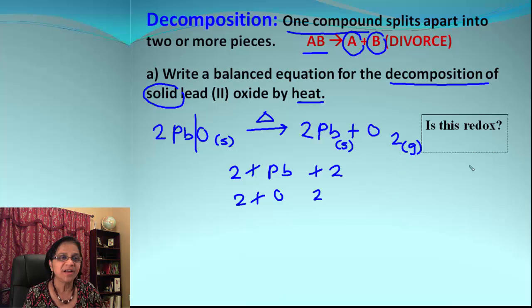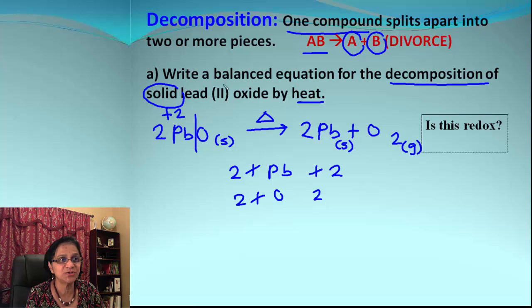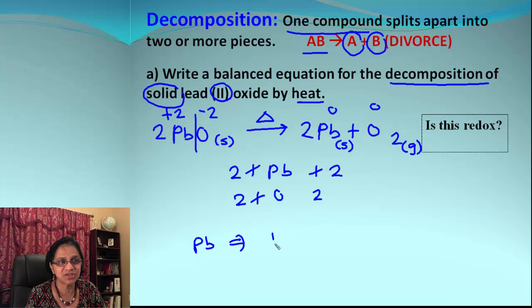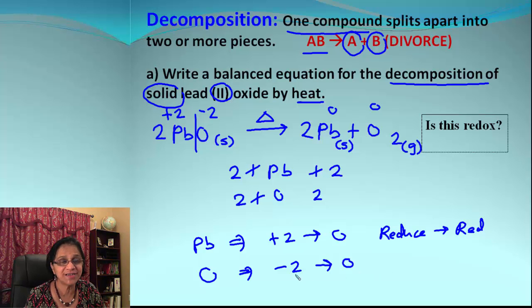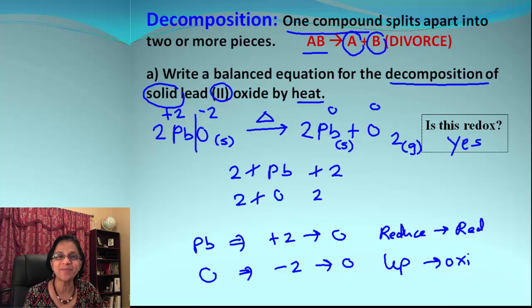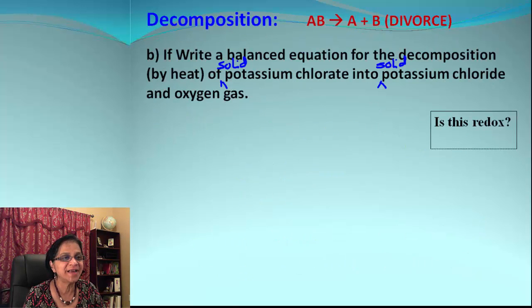Now let's find out if this reaction is redox. In PbO, lead has a charge of +2 and oxygen has a charge of -2. As elements by themselves, both Pb and O have a charge of zero. For lead, the charge changes from +2 to zero — it is reducing, so that is reduction. For oxygen, the charge changes from -2 to zero — it is increasing, so that is oxidation. Overall, this makes the reaction a redox reaction.